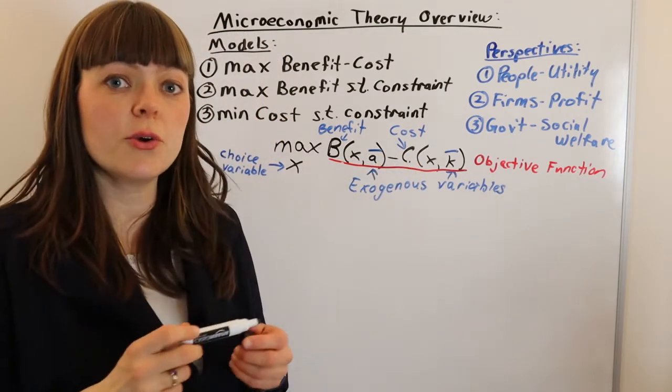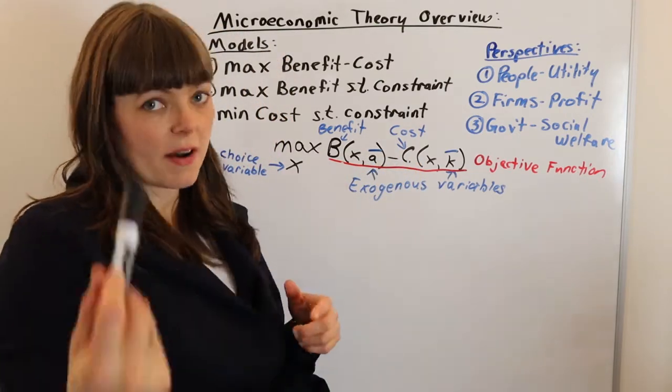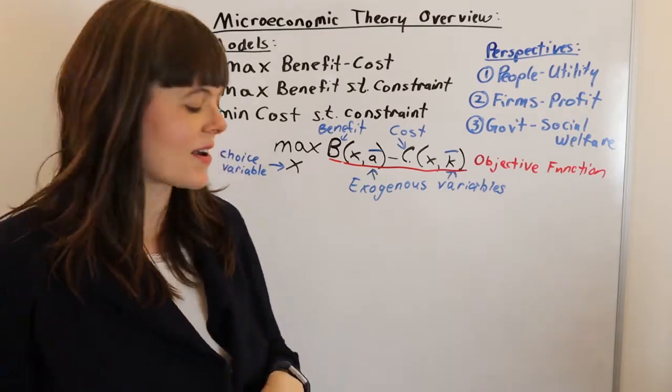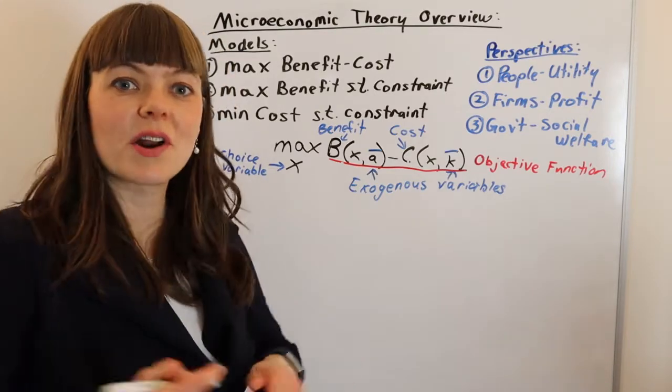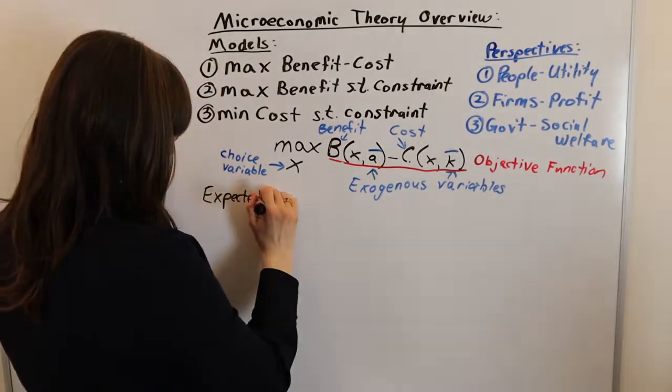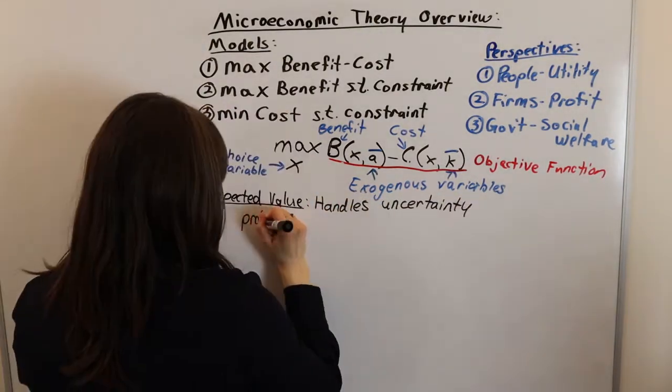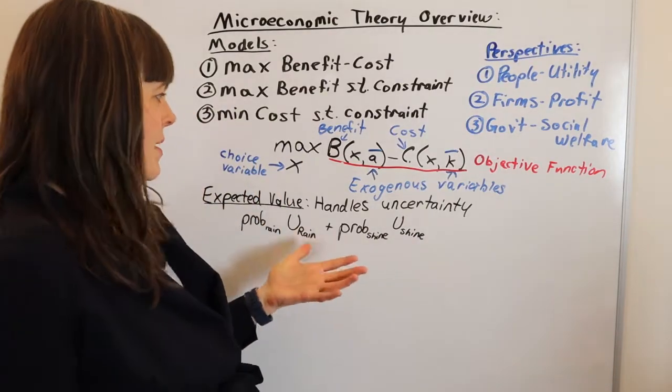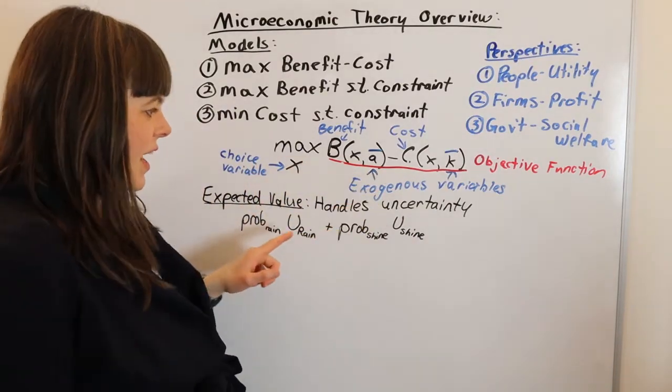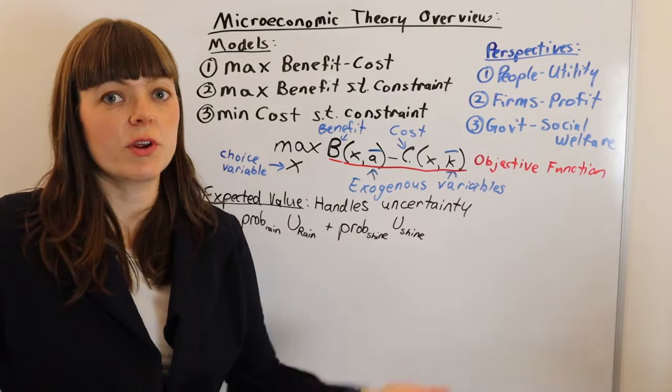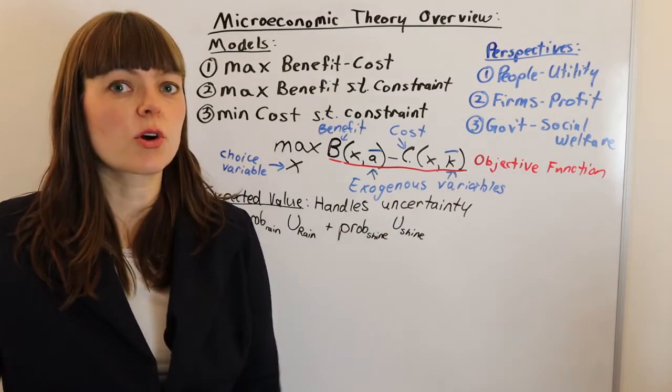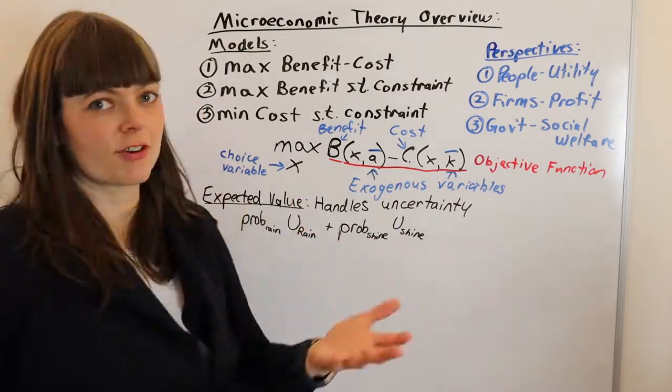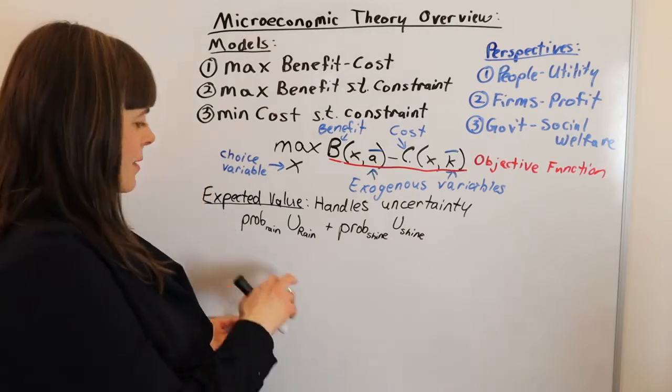We have a few ways that we might need to modify the model to account for certain things that happen in the real world. So what are those things? One adjustment we might need to make is to handle uncertainty—the fact that we don't know what the state of the world will be like and our utility may be different in different states. The classic example here: